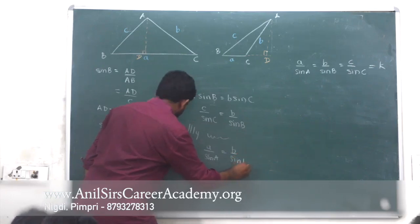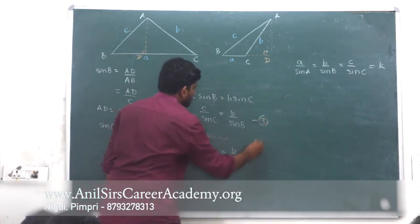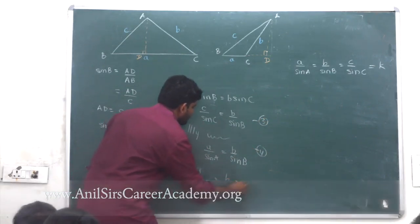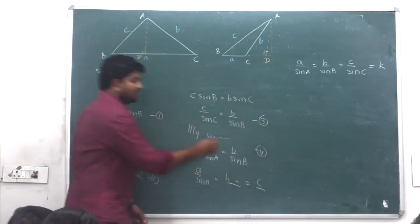So from equation 3 and 4, a upon sine A equal to b upon sine B equal to c upon sine C.